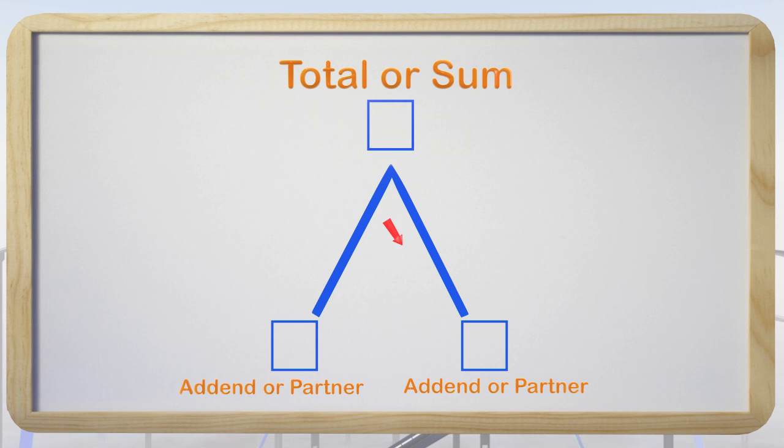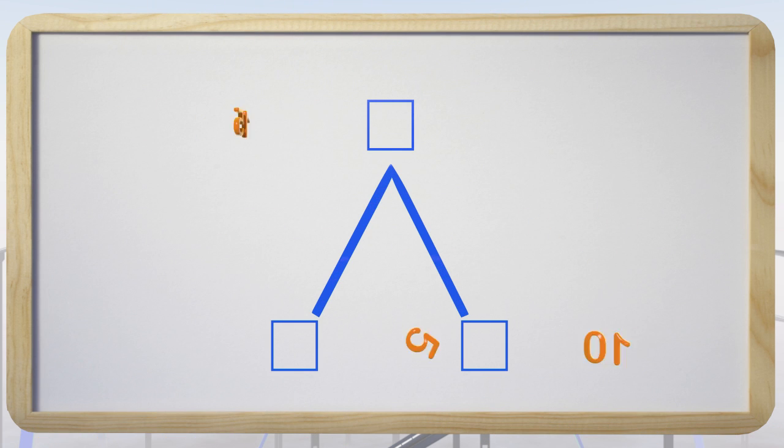Now that we have covered the names, let's take a look at how to use a math mountain. Here we have a math mountain with 15 as the sum. The left addend is 5, and the right addend is 10. In a math mountain, both addends added together will give you the sum.